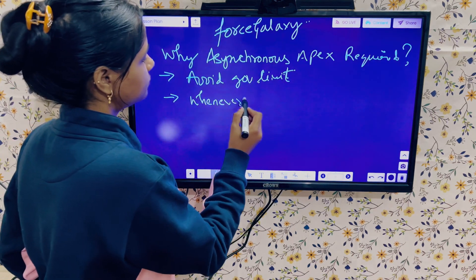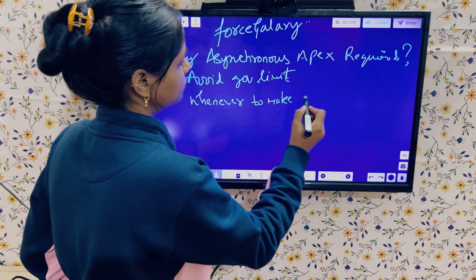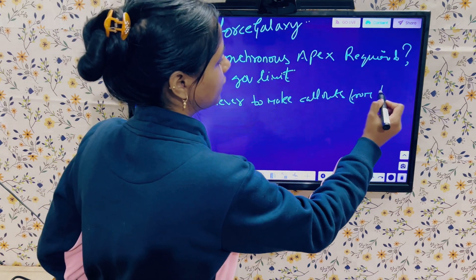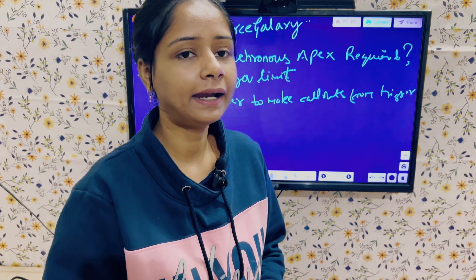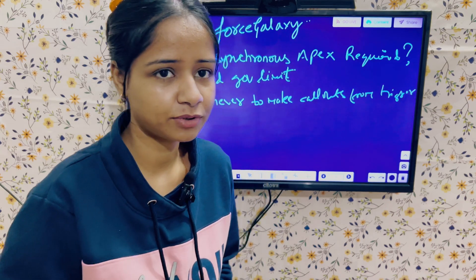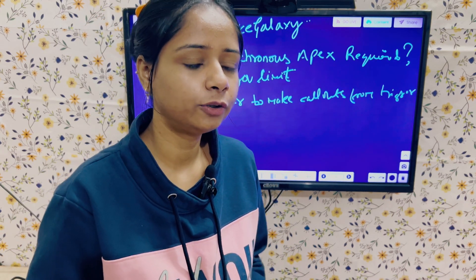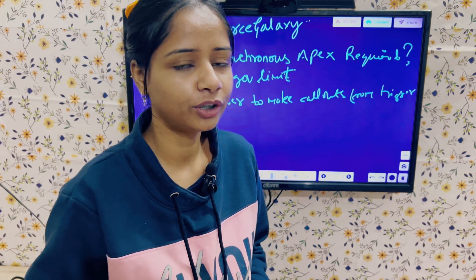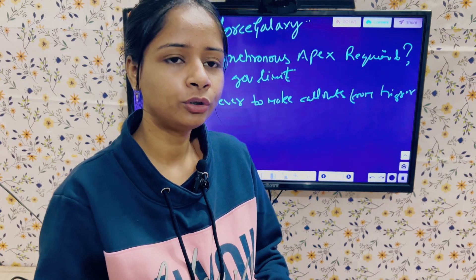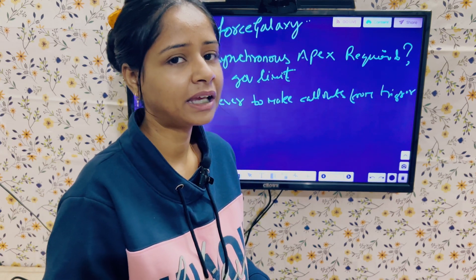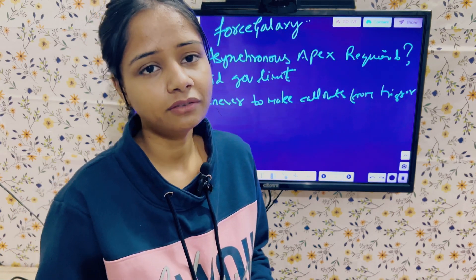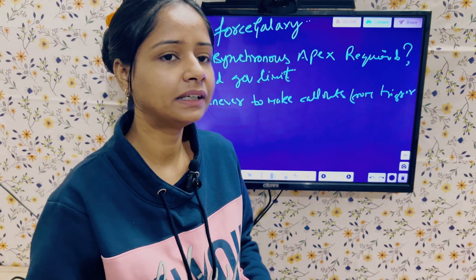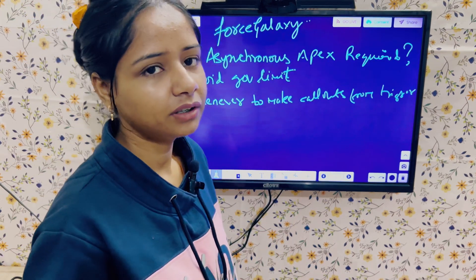The next point is: whenever we want to make callouts from triggers. This is also a very important point — we all know that callouts cannot be made directly from triggers because triggers run in a synchronous way. When we make a hit to an external service it might take some time to get the result, and the trigger cannot wait; if no result is returned at the same time it will throw an error. So to avoid this, whenever the requirement comes to make callouts from a trigger, we separate the callout into a separate thread — making it asynchronous — using future methods.